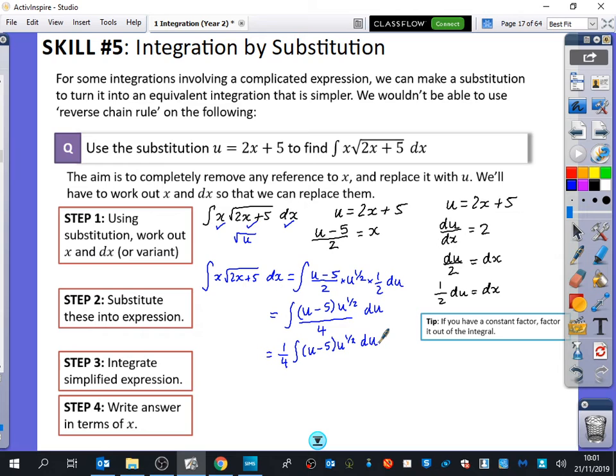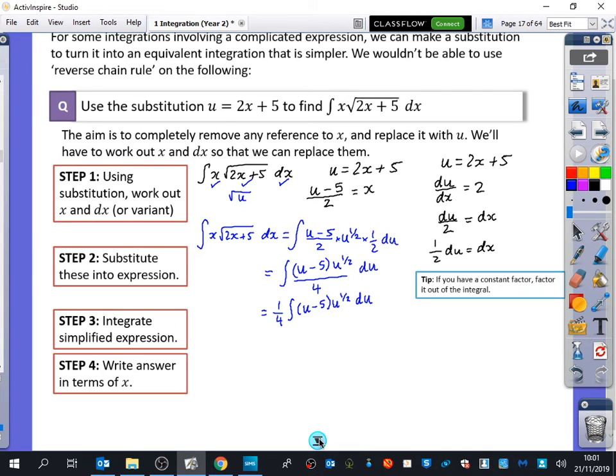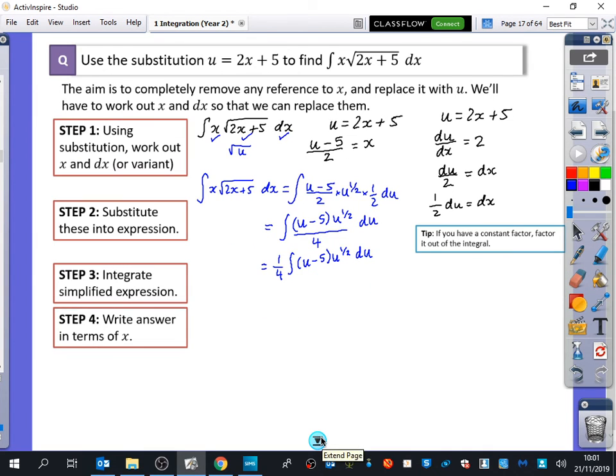We're basically done now. This expression, we can integrate this. You could have done this when you were in year 12. So we're very nearly there. What do I need to do before I can integrate this thing? Just expand the brackets. It's dead easy now. We've just got u to the power of, what's u times u to the half? Yeah, u to the power of 3 over 2 minus 5u to the half. And that whole thing there is being integrated with respect to u. That's why we have to have the du at the end, because we're doing it to a different variable.